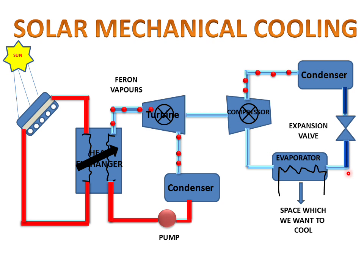This cooling liquid goes to the evaporator. The evaporator absorbs heat via this cooling liquid, and the space which we want to cool becomes cool. The liquid which has absorbed heat then goes to the compressor. So these three cycles are connected for the Solar Mechanical Cooling System: the first cycle is the flat plate collector cycle, the second cycle is the Rankine cycle, and the third cycle is the refrigeration cycle. When these three cycles are connected, we can produce solar mechanical cooling with the help of sun radiation. Thank you.